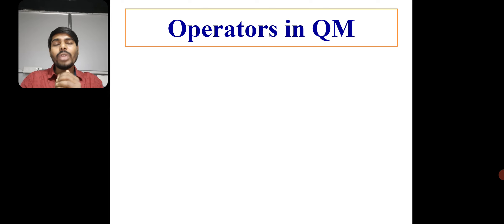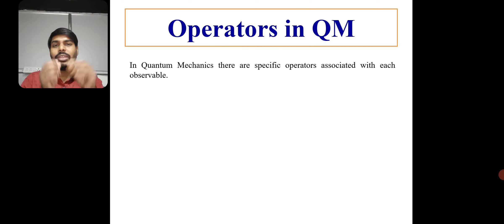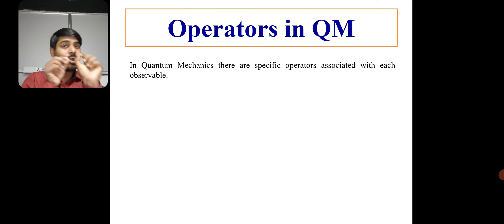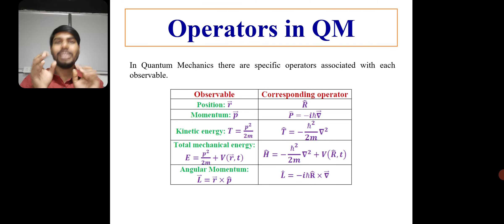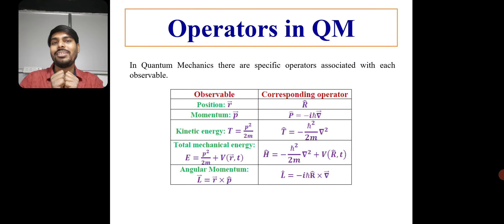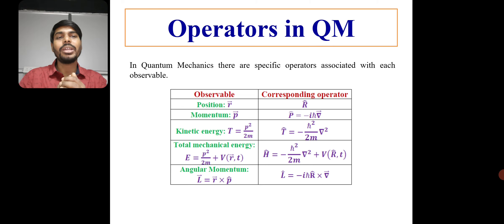Now let's see what the concept of an operator is in quantum mechanics. In quantum mechanics, for each and every observable — position, momentum, energy, etc. — there must be an operator associated with it. For example, for position there is the position operator. For momentum, we use the momentum operator p-hat, which is minus i times h-bar times nabla. Similarly, there are the kinetic energy operator, the total mechanical energy operator, and the angular momentum operator. The right column in the table shows the operators corresponding to each observable.